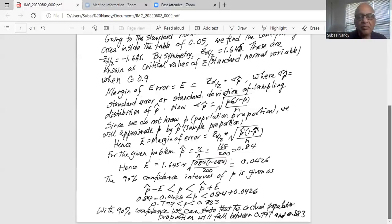With 90% confidence, we can state that the actual population proportion will fall between 0.797 and 0.883. So the 90% measures the efficiency rate or effectiveness rate of the method that I have used to determine this interval.